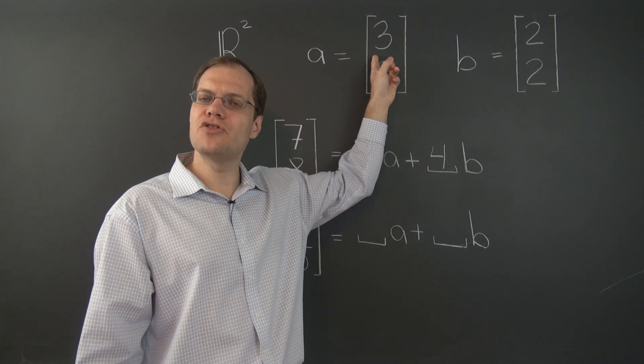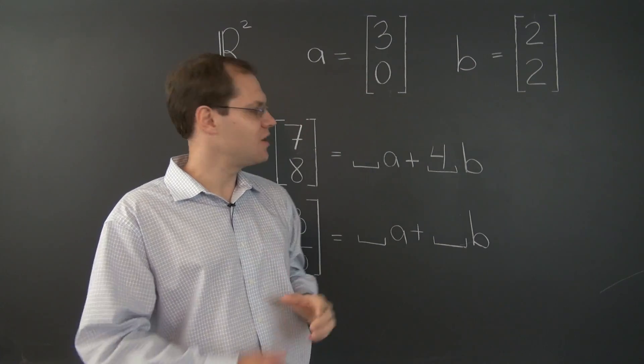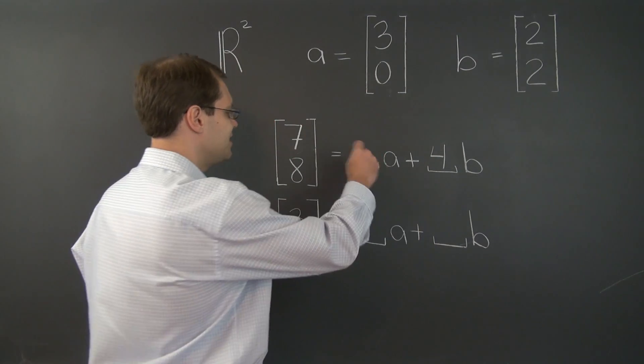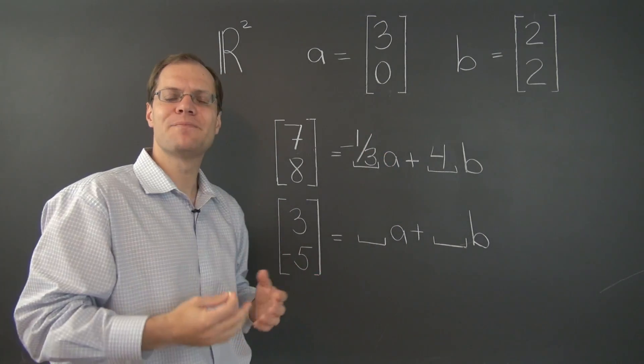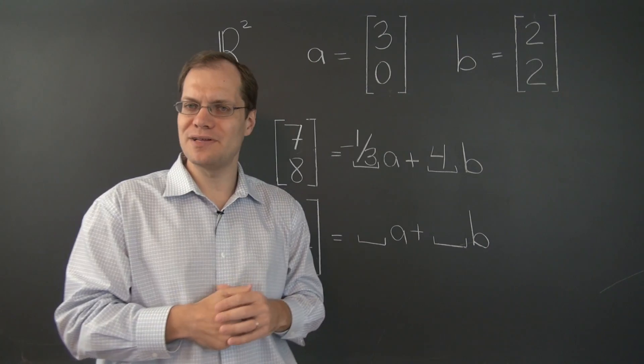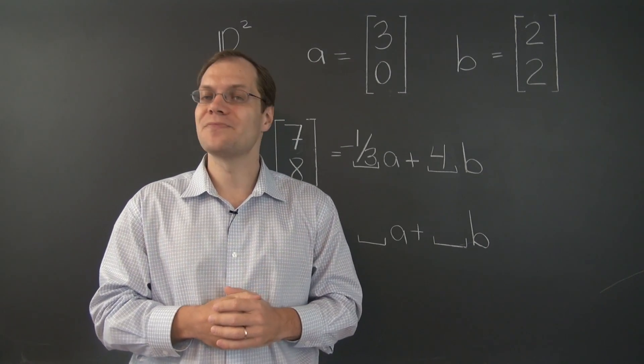Therefore, we must take negative 1 third of A. So fractions appear. Other than that, this problem is no more complicated than what we considered before because the overall strategy is the same.